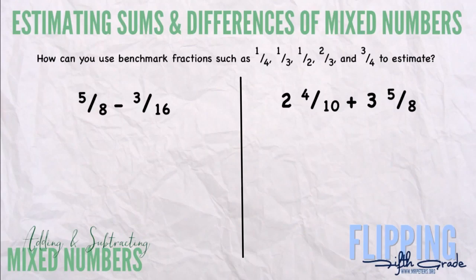So here we have a basic problem that you should have seen before, five-eighths minus three-sixteenths. When we do this, we have to think about five-eighths, is that closest to a half or a fourth, or what is it closest to? In this case, five-eighths is really close to four-eighths, which would give us a half.